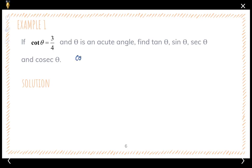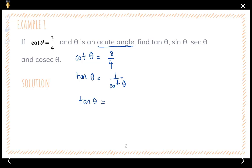We are given that cotangent theta is three over four, and theta is an acute angle — this is important information. Finding tangent theta is quite easy using the formula: tangent theta equals one over cotangent. Since cotangent is three over four, tangent theta is four over three.